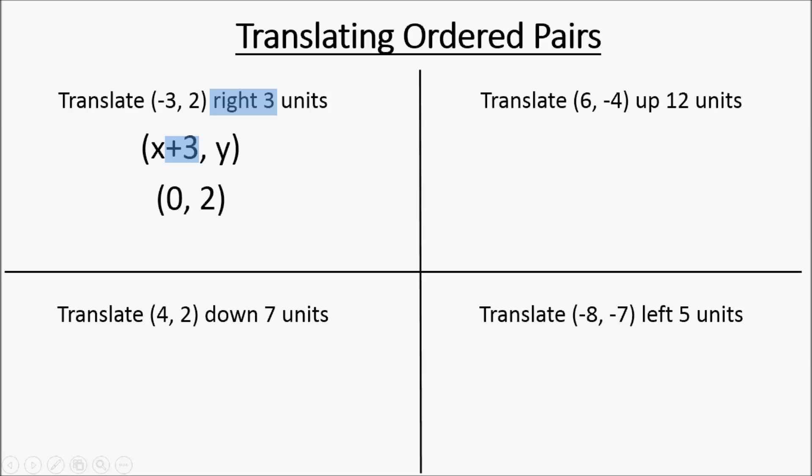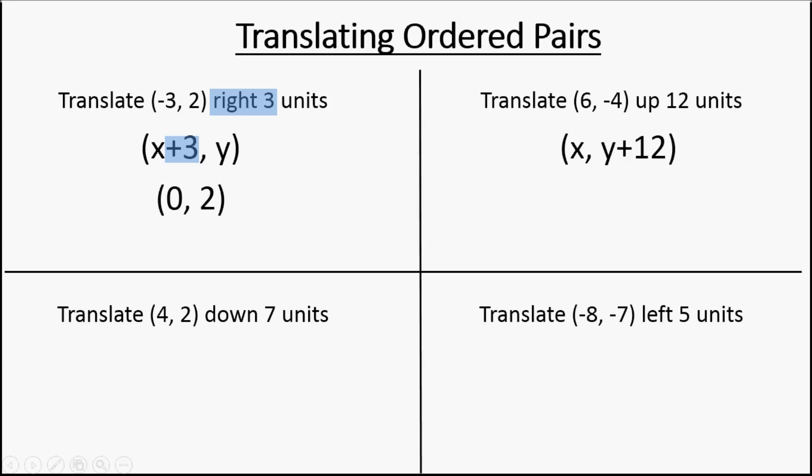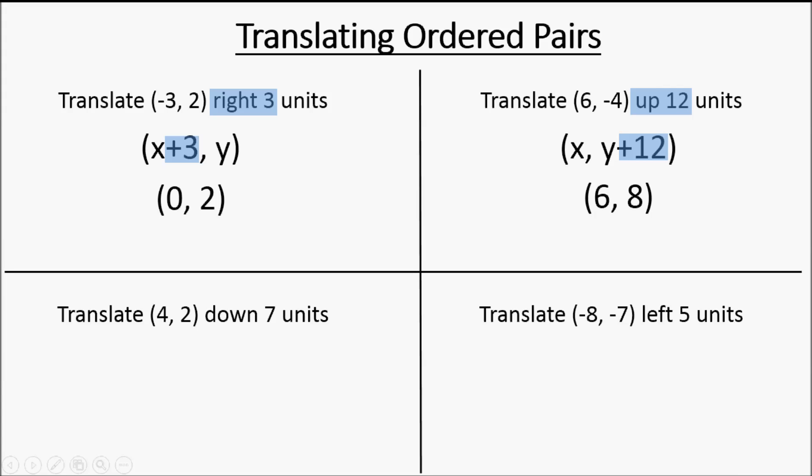We're looking at the top right one now. We're translating six, negative four up twelve units. Moving something up is going to be a change in y, so that means we're adding twelve to the y-value. The x-value stays the same — the x-value was six, it's still going to be six. The y-value: we stick negative four in for y and add twelve to it. Our new value is going to be six comma eight. That's the new location.